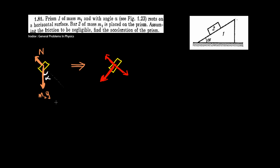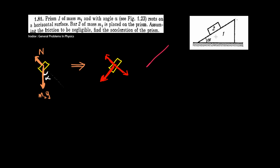Now imagine that I sit on top of this prism and watch the bar go. According to me, it's just going to move like that — actually the opposite direction. But if you do this practically, you will see that the prism goes not quite at angle alpha, but an angle a bit more than that. So there's going to be one more force, which is called the pseudoforce.